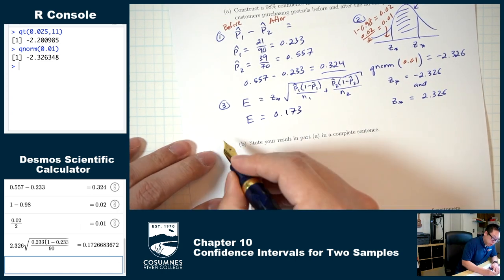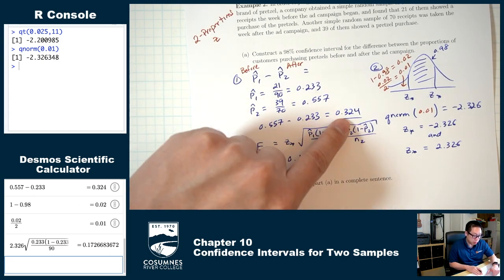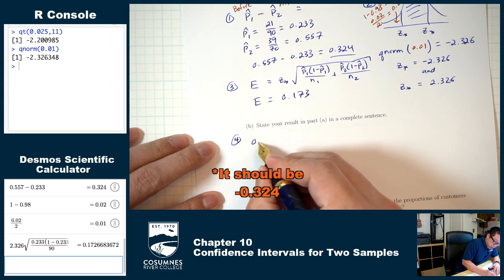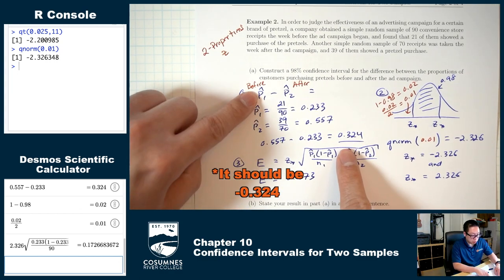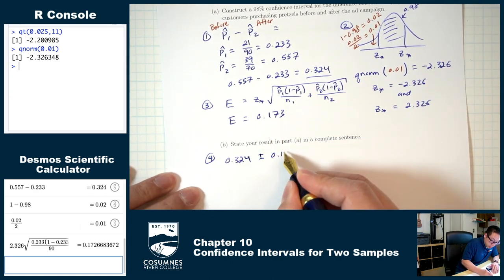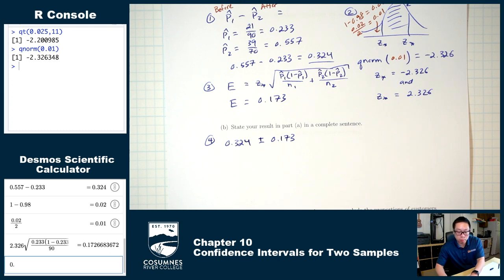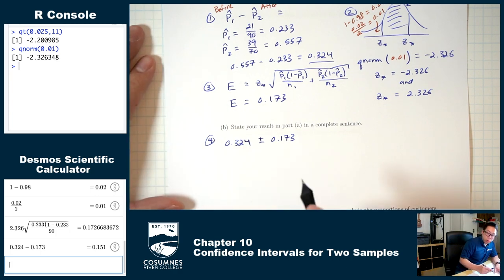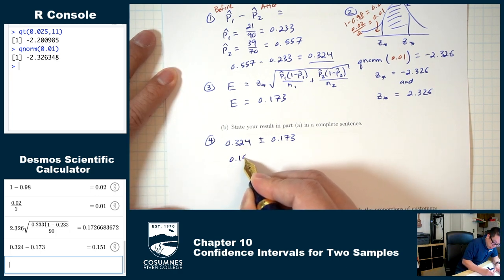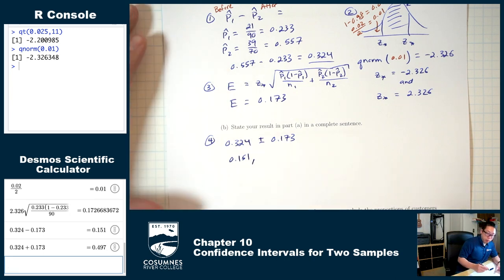Step four: construct the confidence interval. Start with 0.324 plus or minus 0.173. The low number is 0.324 minus 0.173 equals 0.151. The high number is 0.324 plus 0.173 equals 0.497. That's our confidence interval.